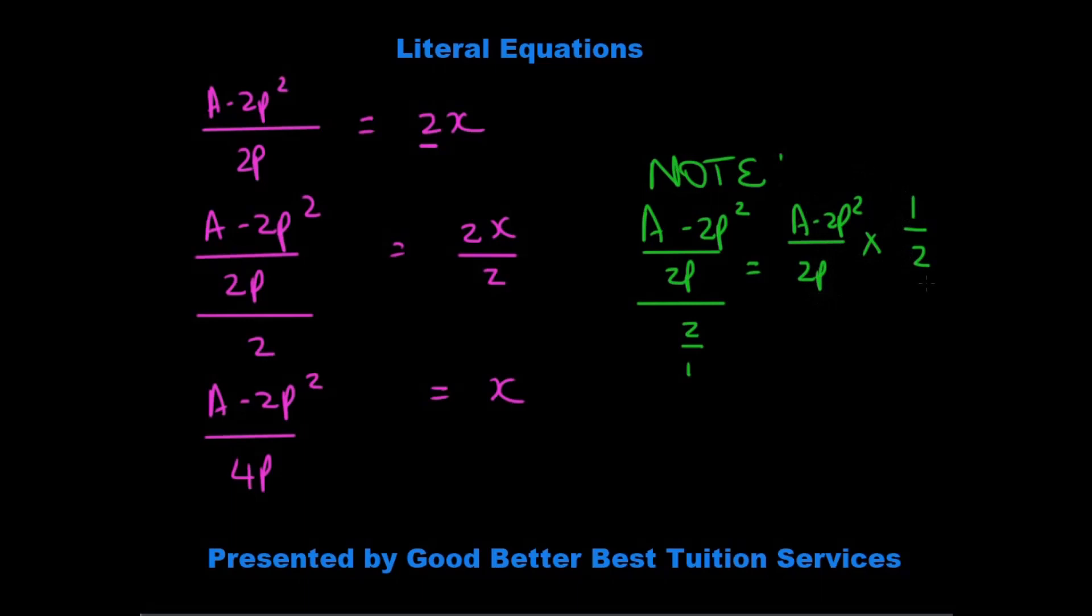And that gives us a minus 2p squared over 4p is equal to x.